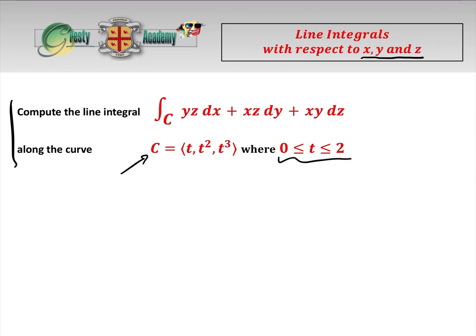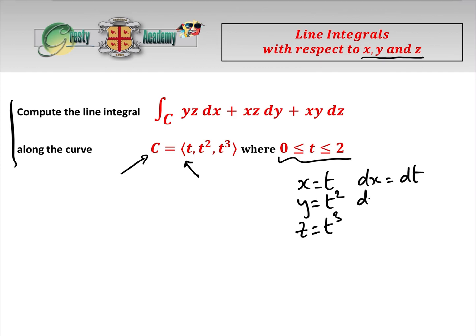Method A is to parameterise everything in terms of t. From the parameterisation we know that x = t, y = t², and z = t³. Therefore dx = dt, dy = 2t dt, and dz = 3t² dt. So far so easy.